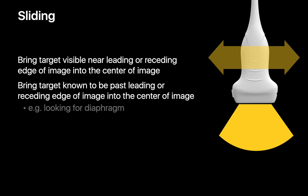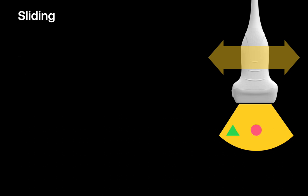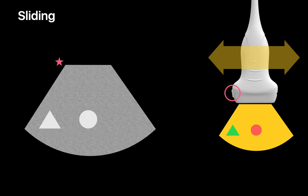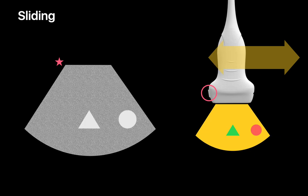Sliding is generally used when we want to bring a target that is visible near or just past the leading or receding edge of our image into the center of the image. Let's say we're scanning some anatomy and the object of interest is that triangle. By sliding the probe, we can bring the triangle from the leading edge of the image to the center of the image.